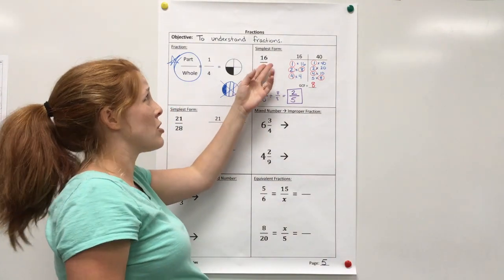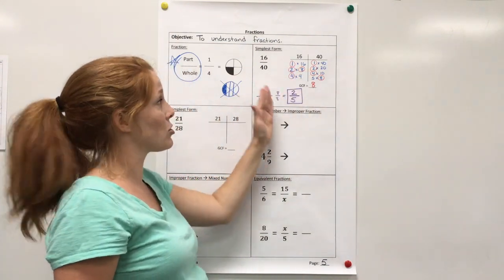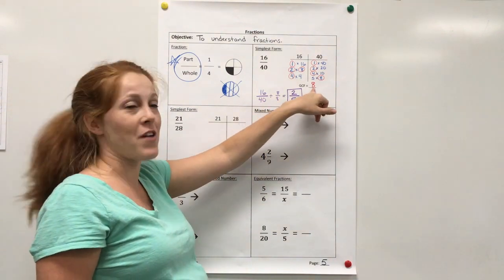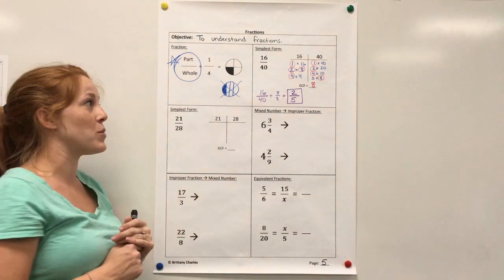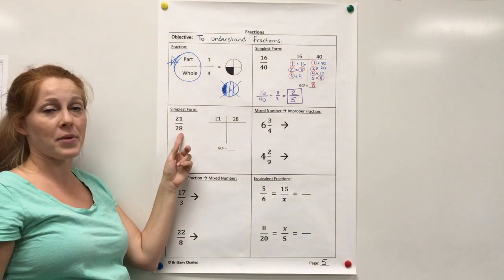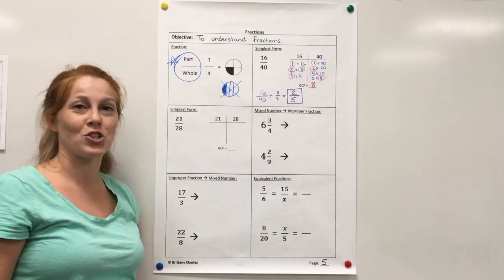Now, you could also divide by 2 over 2 and then divide by 2 over 2 again and do multiple steps to get to simplest form. But using the greatest common factor allows you to do it in one step. Okay, so go ahead and try this one. Start by finding the factors of 21 and 28 by numerator and denominator. Find the greatest common factor and divide by that. See what you get.